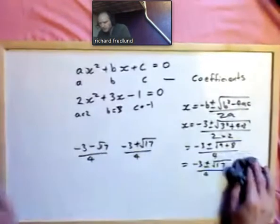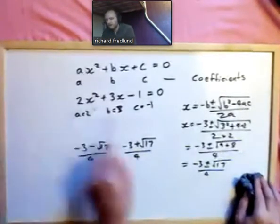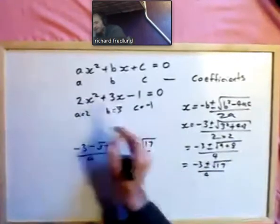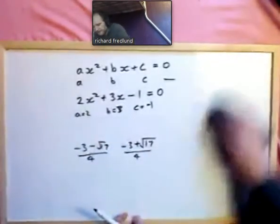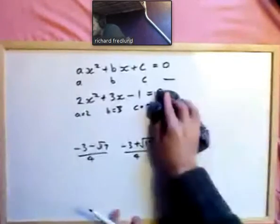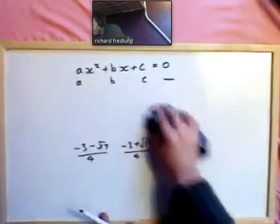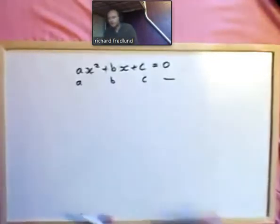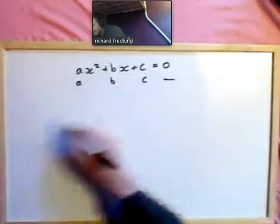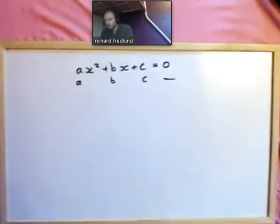That's an example of solving a quadratic equation using the coefficients and the formula. But where does that formula come from? Before explaining that, let's see why this equation has two solutions.